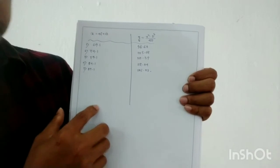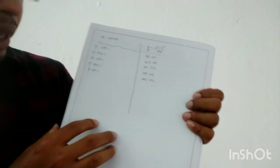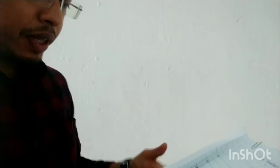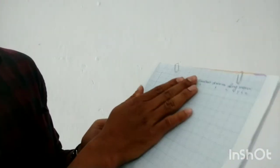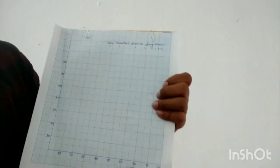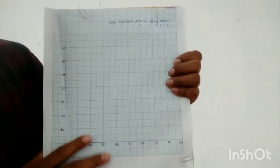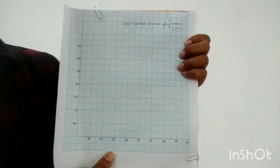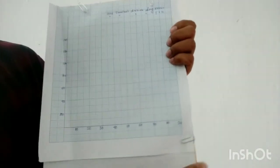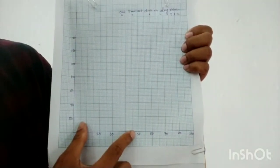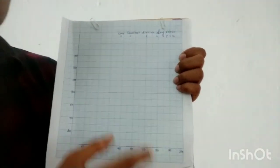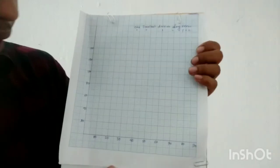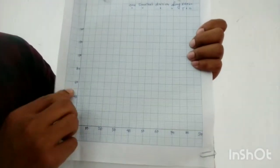Now let's start the process. Here I have taken one graph. In your board practical, a two-millimeter graph will be given. In that graph you have to plot the values. These are the divisions, but in the table you have the actual values.